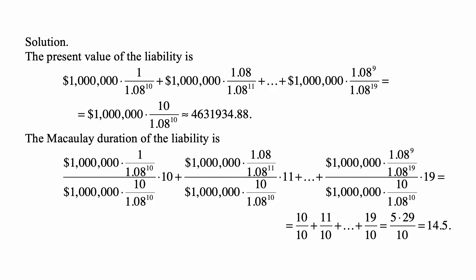And note that 10 plus 19 is 29, and then 11 plus 18 is 29, and so on, so we have pairs that add up to 29, five of such pairs, so therefore that's 5 times 29 over 10, that's 14.5.